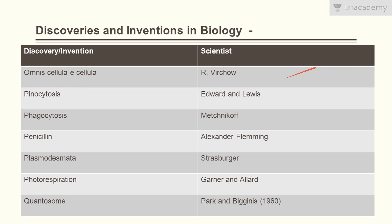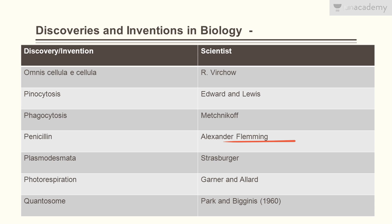Pinocytosis was discovered by Edwards and Lewis. Phagocytosis was discovered by Metchnikov. Penicillin was discovered by Alexander Fleming. Plasmodesmata was discovered by Strasburger. Photorespiration was discovered by Garner and Allard.